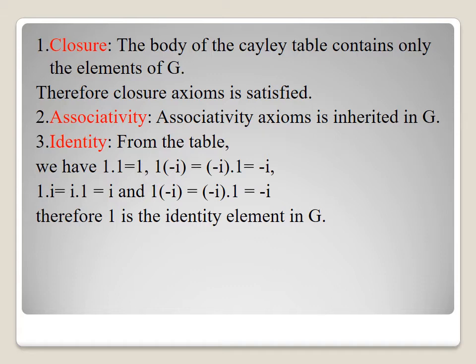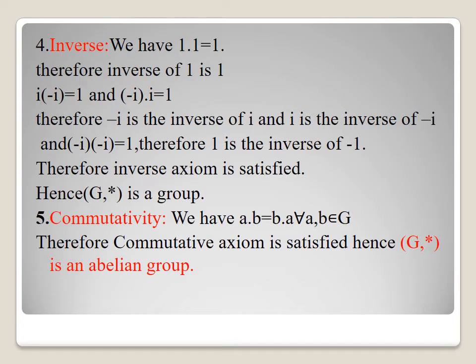We observe that any element multiplied by 1 gives the same element, so 1 is the identity element in G. For the inverse axiom: 1·1 = 1, so the inverse of 1 is 1. Since i·(−i) = 1, the inverse of i is −i. The inverse of −i is i, and the inverse of −1 is −1. Therefore, the inverse axiom is satisfied. Hence, (G, *) is a group.